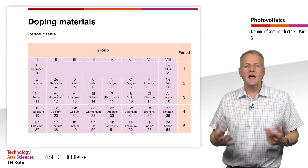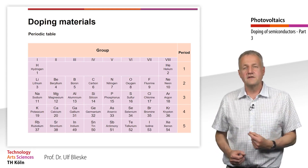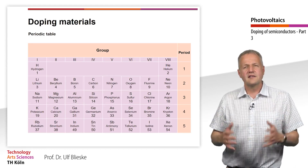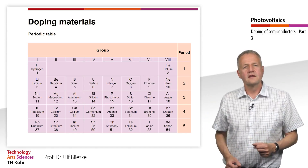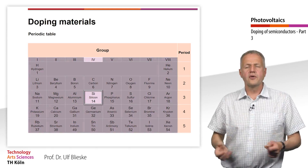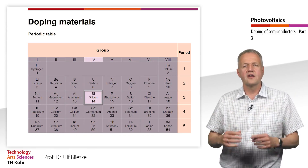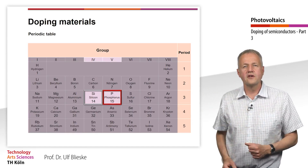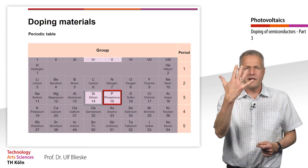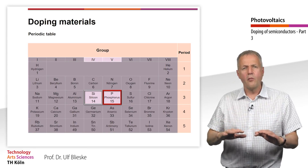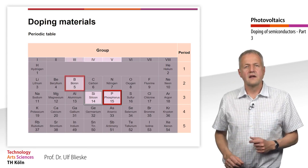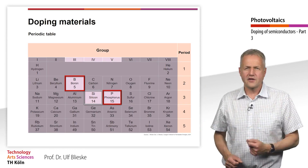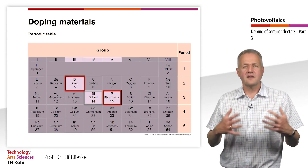Doping can have a significant effect on the conductivity of a semiconductor. To understand this, let's first look at the periodic table of elements. Silicon is in the fourth main group and has 4 valence electrons, meaning 4 electrons in the outer shell. Next to it, in the fifth main group, is phosphorus with 5 electrons — 1 electron more than silicon. In the third group, there is boron with 3 electrons in the outer shell, so 1 electron less than silicon.